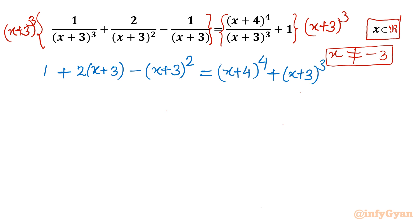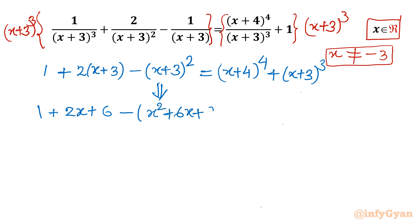Now let us solve the LHS. I will expand (x+3)² using the identity (a+b)² = a² + 2ab + b². So we get 1 plus 2x plus 6 minus (x² + 6x + 9). The RHS remains x plus 4 whole power 4 plus (x+3)³.